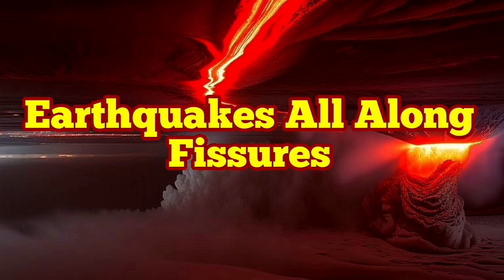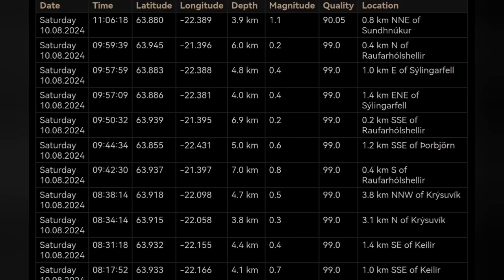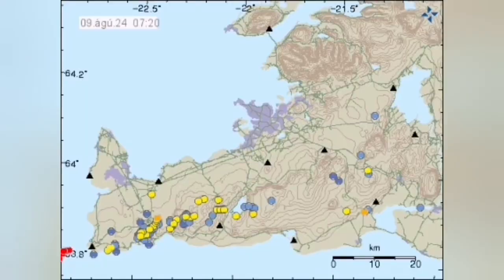We are seeing a line of earthquakes along the fissure, or we should say the dike that is at depth. These are the earthquakes in the Svartseng volcanic system of the Reykjanes Peninsula of Iceland.